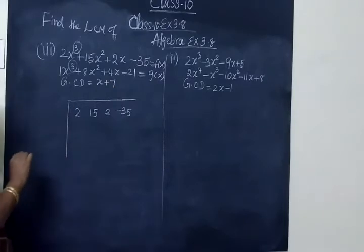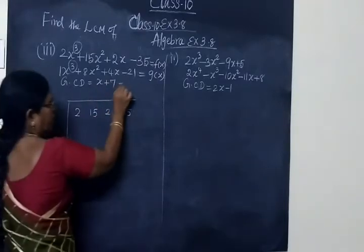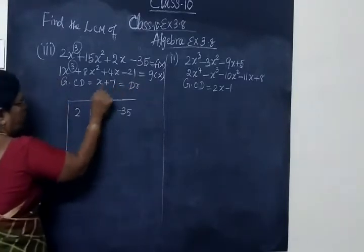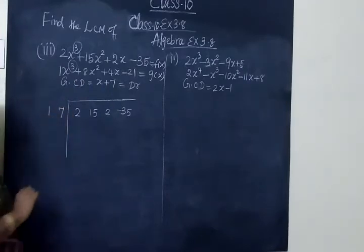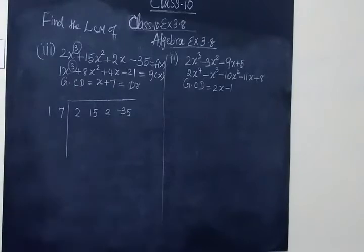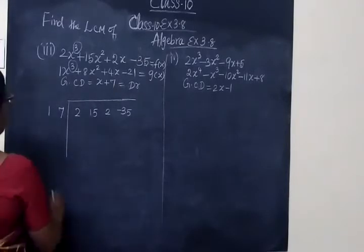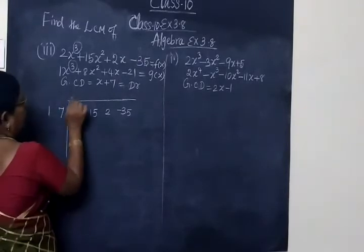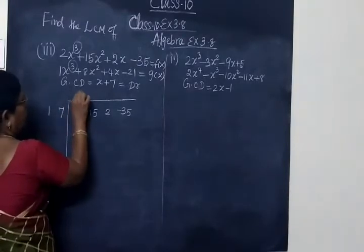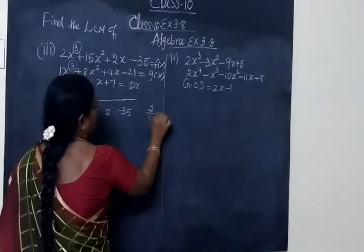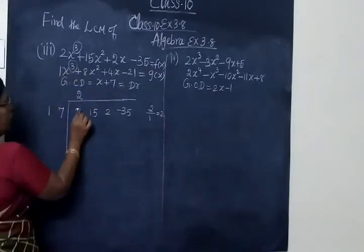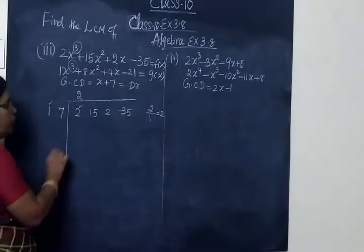Now GCD is divided. So checking the coefficients: 1 and 7. Once again we check the numbers: 2, 15, 2, minus 35. This is 2. So 2 by 1 is equal to 2. This is the first quotient number.